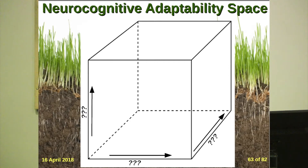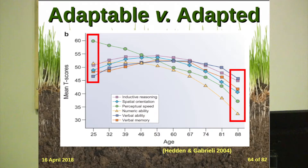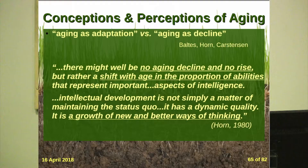Younger people are adaptable, older people are adapted — less adaptable, more adapted. John Horn said there may be no aging decline and no rise, but a shift in proportion of abilities, and a growth of new and better ways of thinking. He's right — we really do get better adapted to our environment as we get older. Lashley in 1930 observed that a rat trained in a maze would follow the correct path with every variety of twist and posture — there always seems to be an adaptive reorganization.